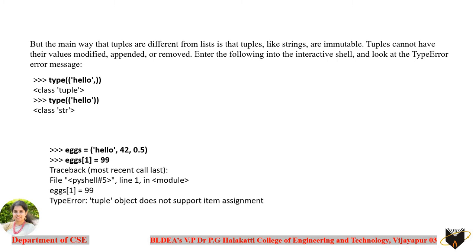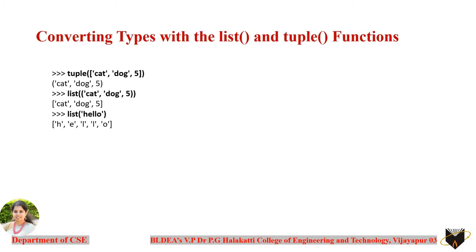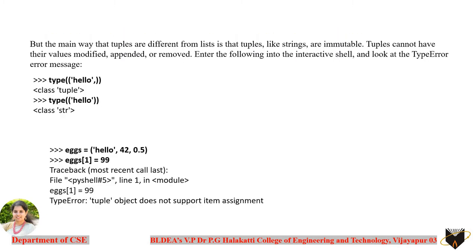The most important difference is with mutable and immutable data types. The list is considered a mutable data type and tuples are considered an immutable data type. If you are able to change the already-added content of a data type, then it is said to be mutable, which is the case with list.